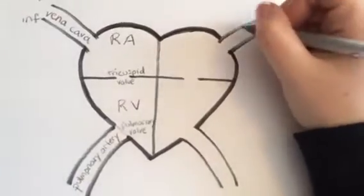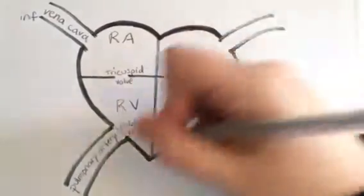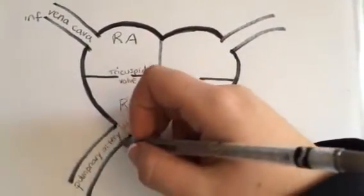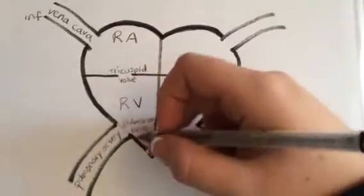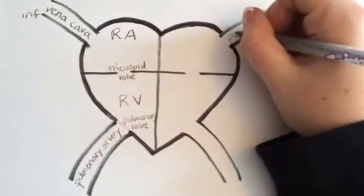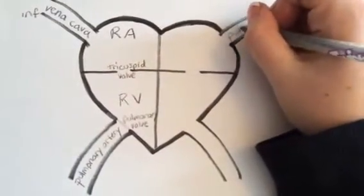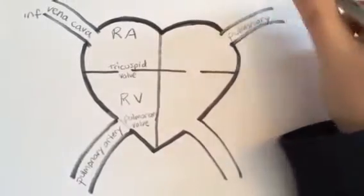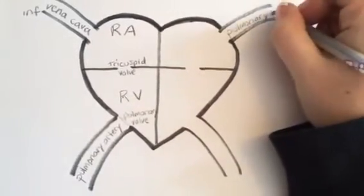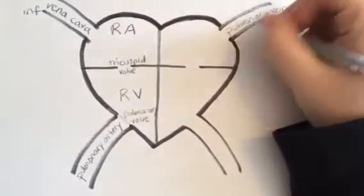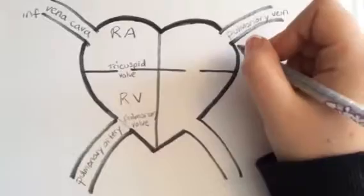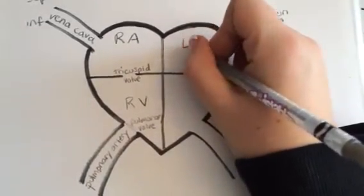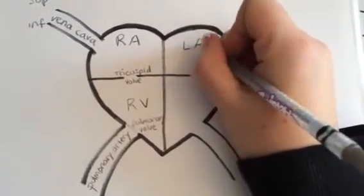The blood leaves the heart through the pulmonary artery to the lungs, and then travels back through the pulmonary vein from the lungs into the left atrium.